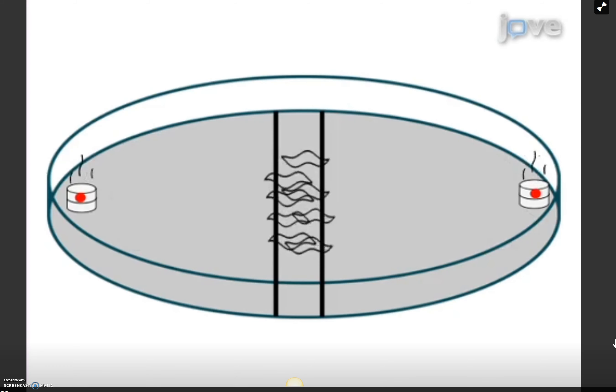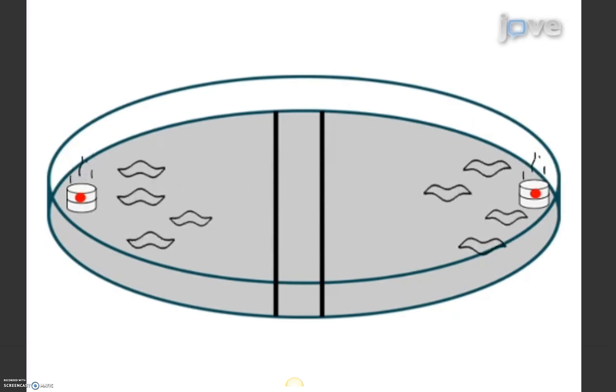Then, the second training phase of 5 minutes is carried out on a dish without the fructose reward, and with odor containers on each side that contain amyl acetate.